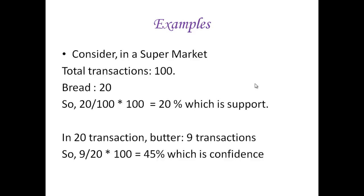In this 20 transactions, in 9 transactions, people who are getting bread also get butter. So, 9 by 20 into 100 equals 45%, which is confidence. Now you would have understood about confidence and support.